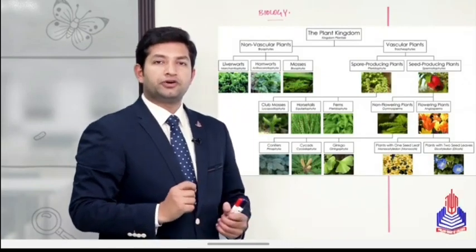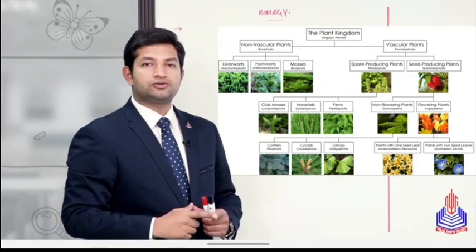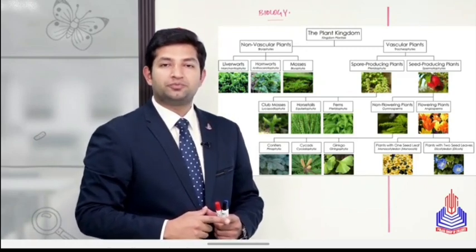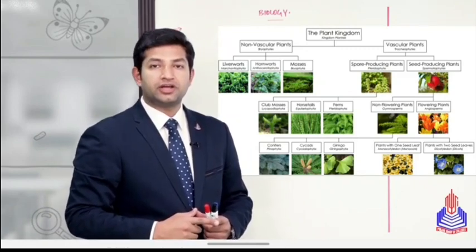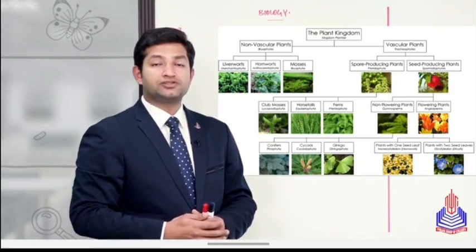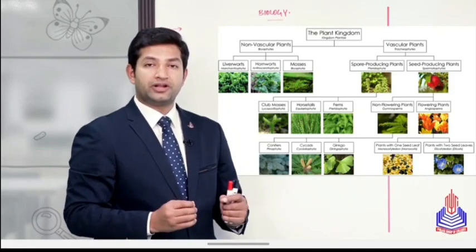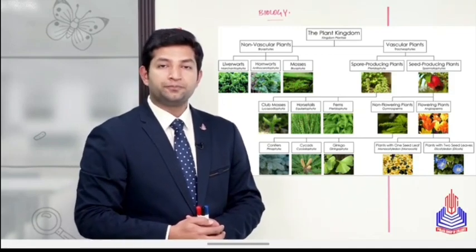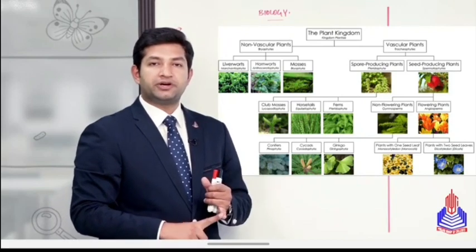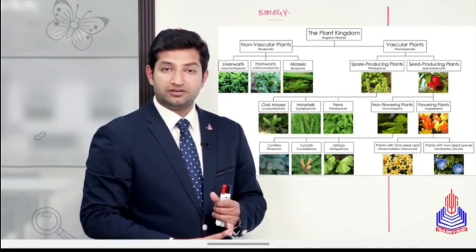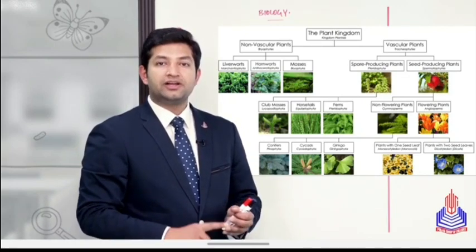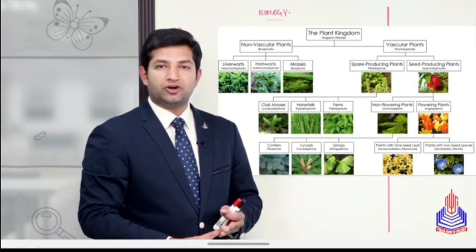The first group was the non-vascular plants, and the non-vascular plants' name was Bryophytes. Okay, after the bryophytes, we have seen that the vascular plants were Tracheophytes. The groups of Tracheophytes we have studied so far are Psilopsida, Lycopsida, and Sphenopsida.